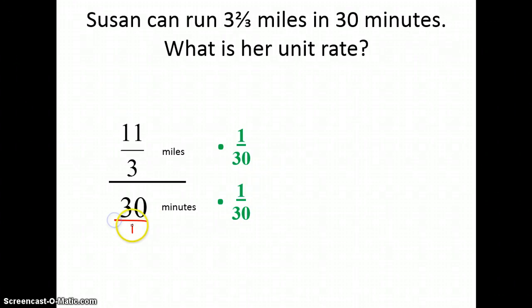Because, remember, all whole numbers really have that one in their denominator. When I do that, I get one minute in the bottom, which is what I'm looking for when I'm making a unit rate, to have the denominator one. Then I multiply my numerator by the same thing I multiplied the denominator by, 1 thirtieth. And that gives me 11 ninetieths of a mile per minute.